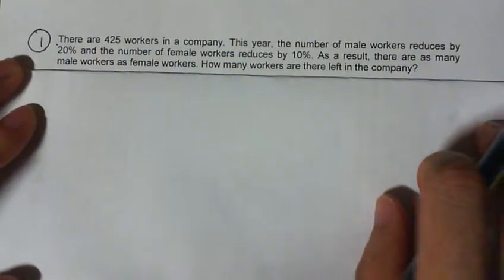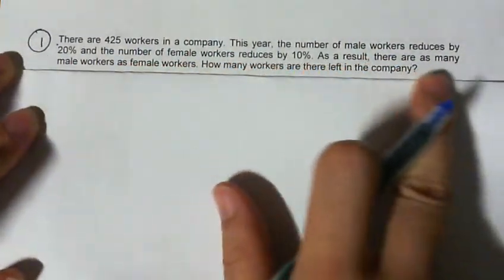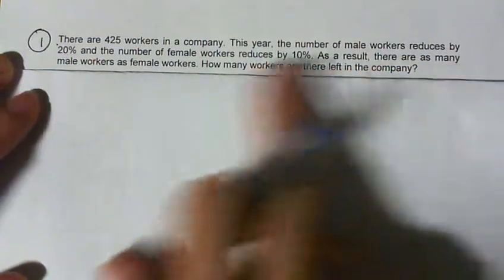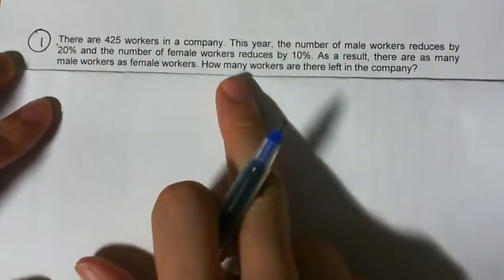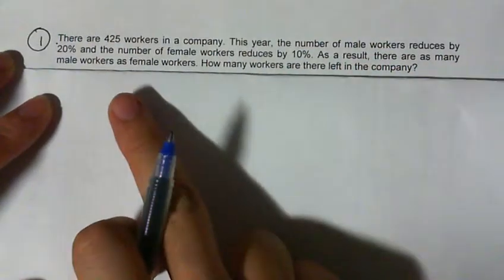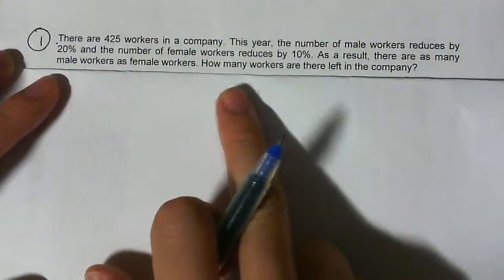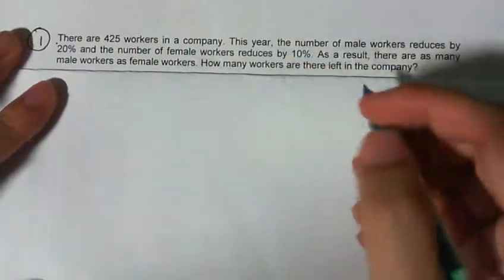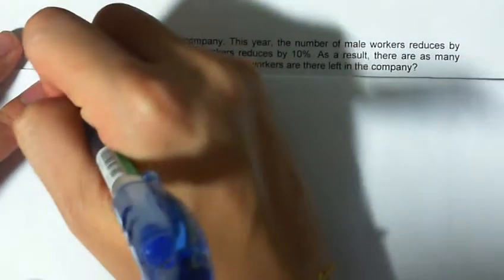This is Med Set 7, Question 1. There are 425 workers in a company. This year, the number of male workers reduced by 20% and the number of female workers reduced by 10%. As a result, there are as many male workers as female workers. How many workers are there left in the company?